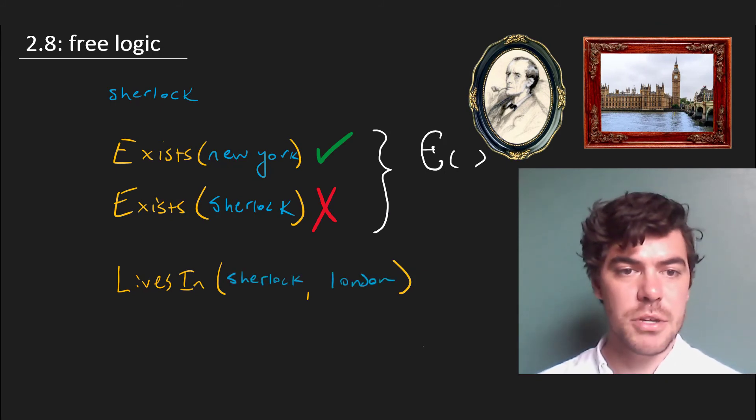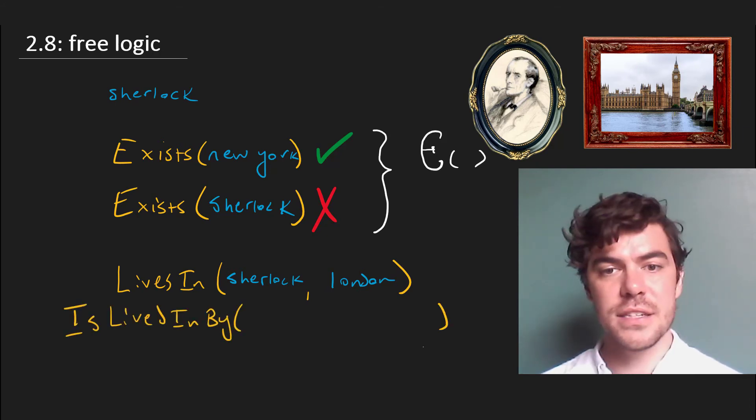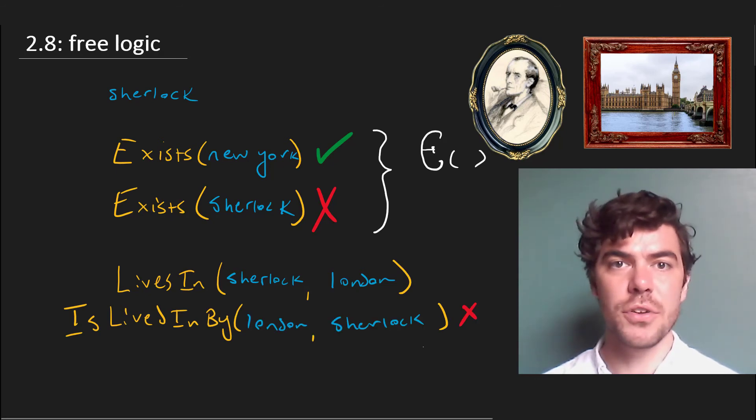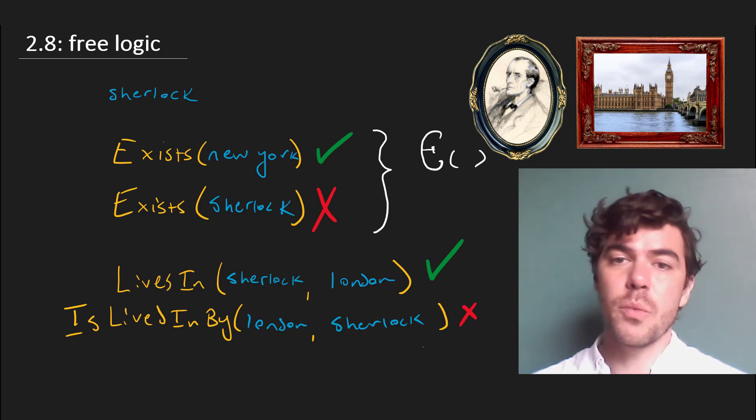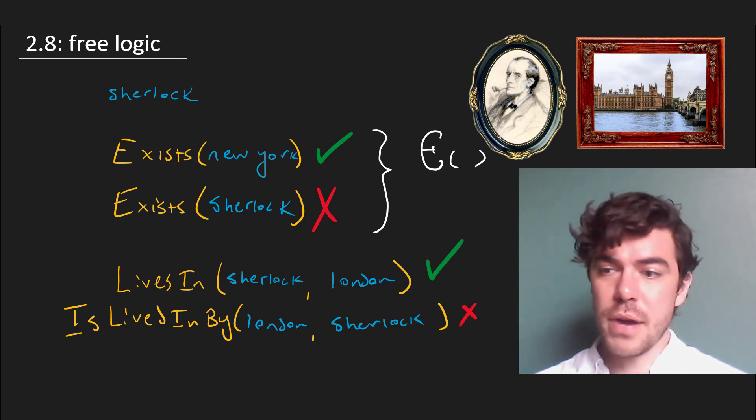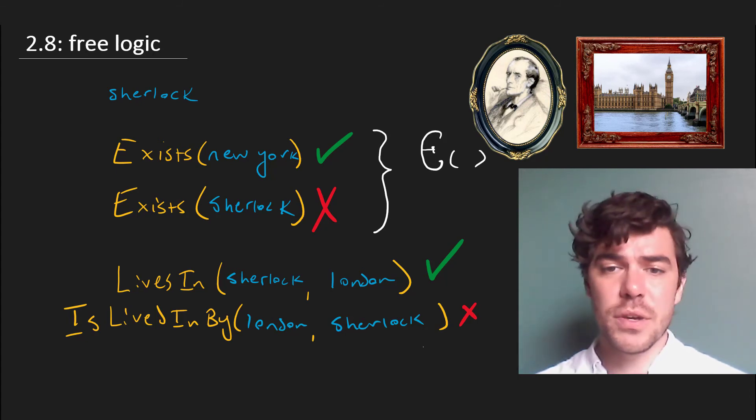But there won't be the same symmetry we saw in our other predicates, which was underwritten by the assumed existence of the things that they deal with. So is lived in by will appear to be false of London and Sherlock, whereas Sherlock lives in London will be true. So doing away with our assumption that our constants only name things which exist has introduced this difficulty with predicates.